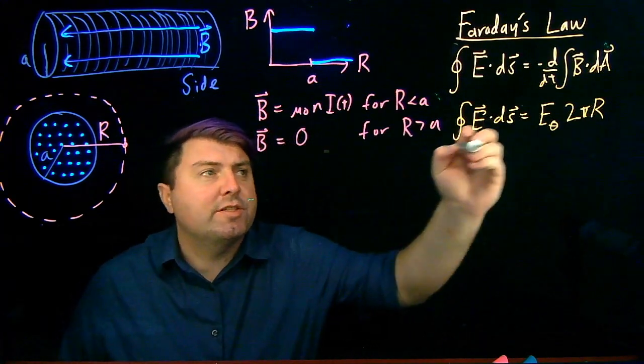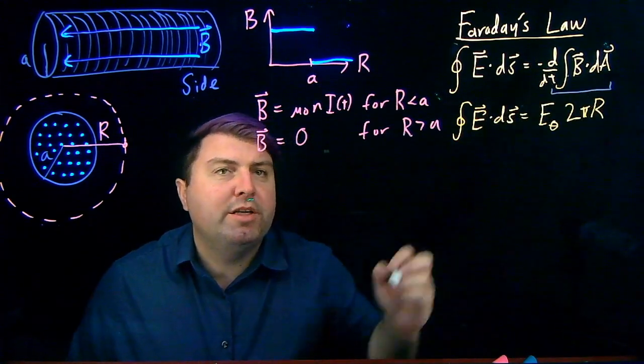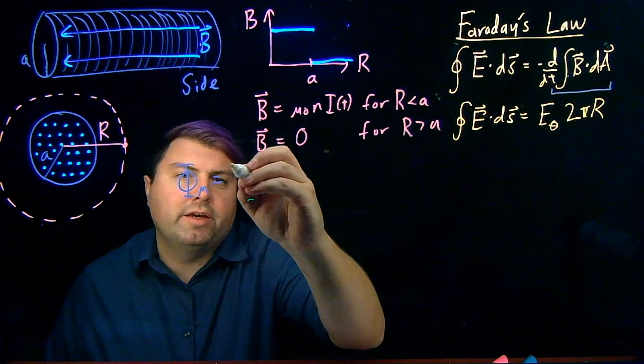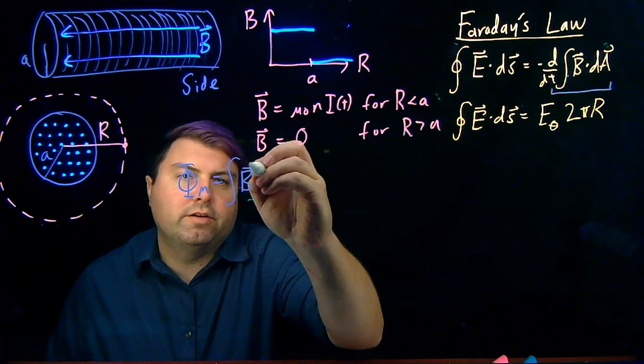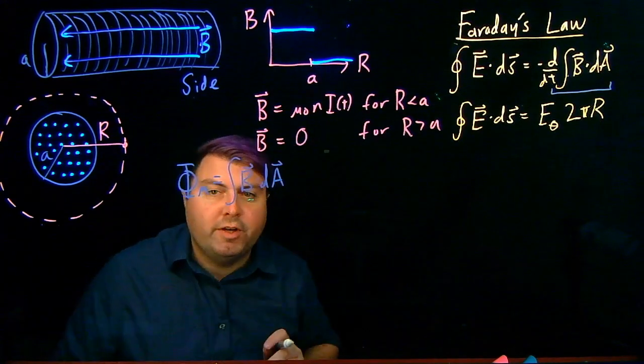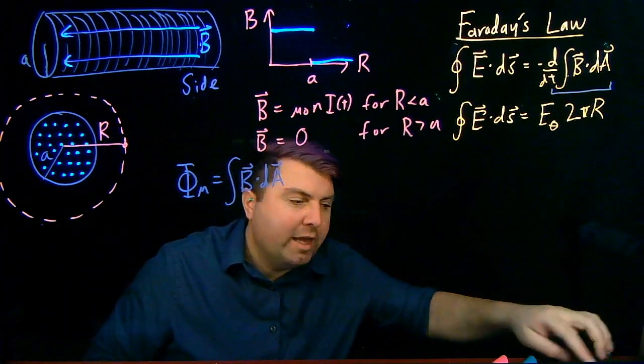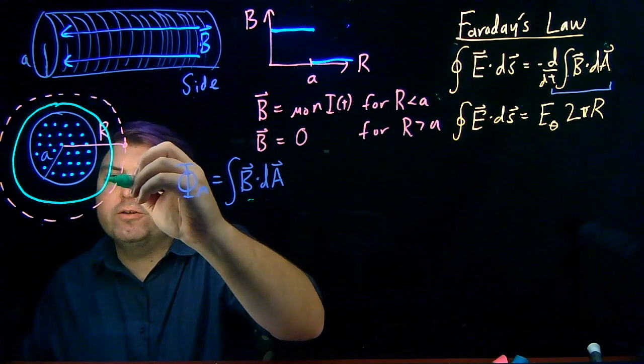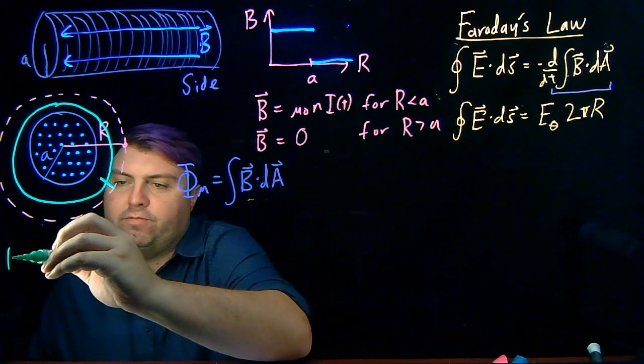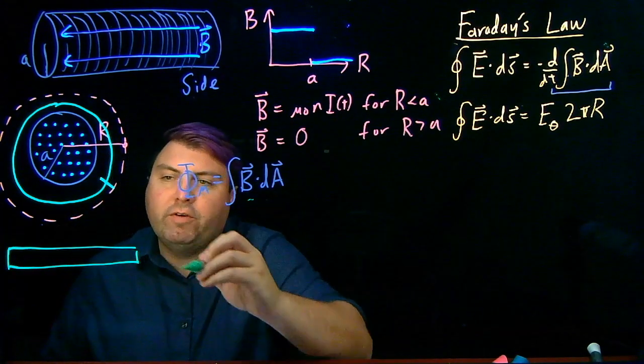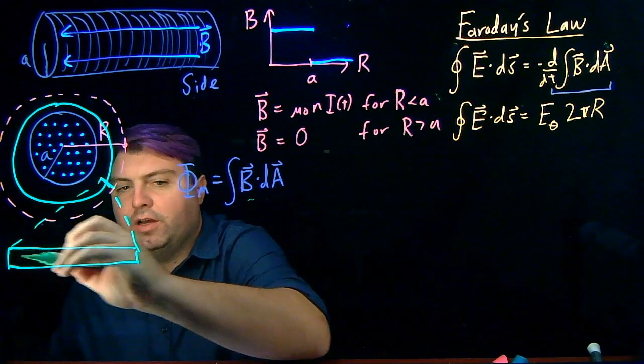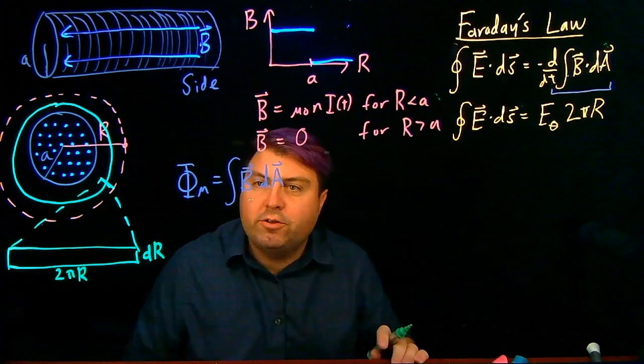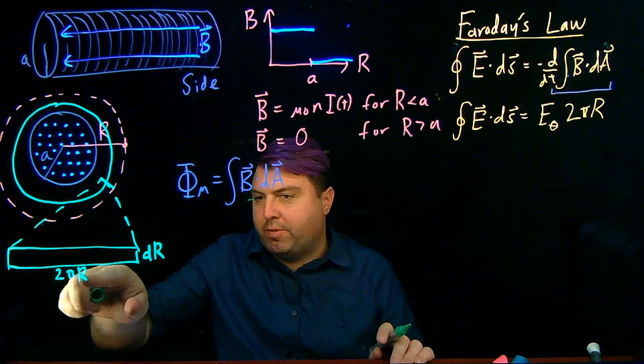The first step to do for this side is to look at this integral of B dot dA, which also we can call the flux, so we can say that our flux magnetic is our integral of B dot dA. So, we need to integrate over this area. A way to integrate over this area is to choose a ring. And if we were to slice this ring and kind of move it over here, we've seen this before a little bit, where our ring would have a thickness of dR, and it would have a length of 2πr.